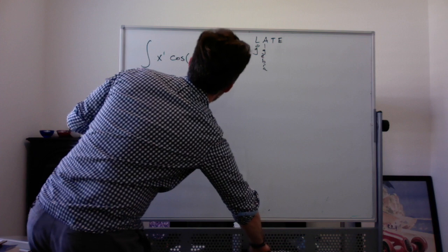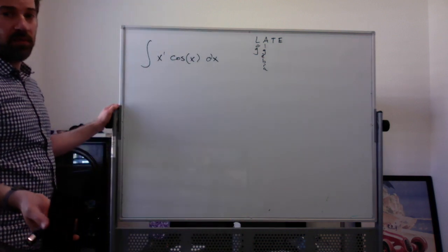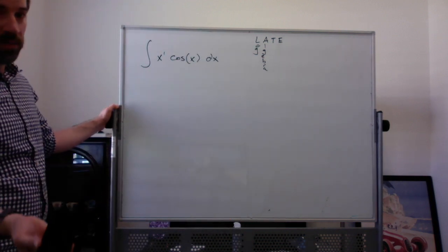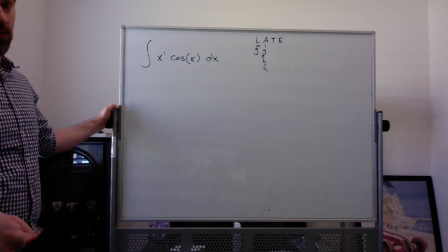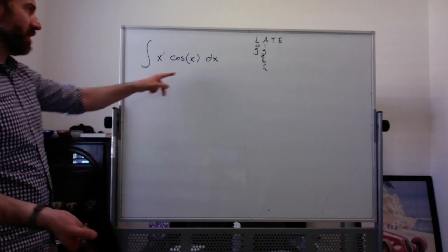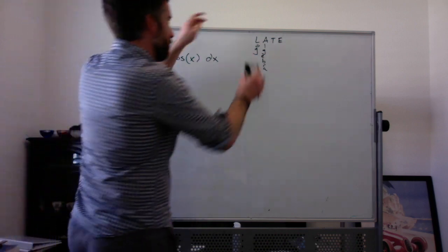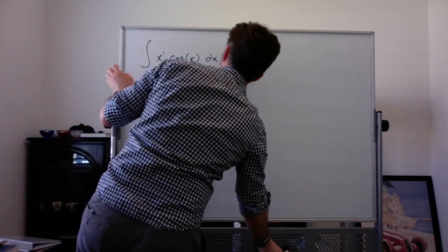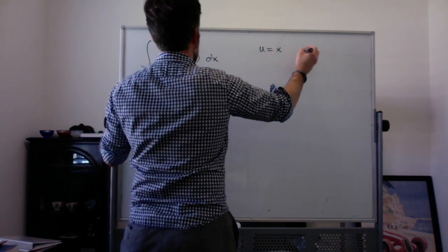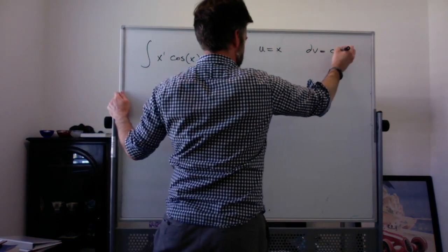So I'm going to pick u equal to x. The other way to remember how to pick u and dv is that dv should be the most complicated thing that's still relatively straightforward to anti-differentiate. Cosine is definitely more complicated than just x, and we know how to anti-differentiate cosine. So I'm going to pick u equal to x, dv has to be everything else.